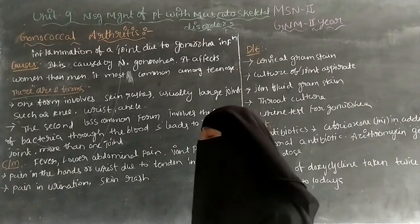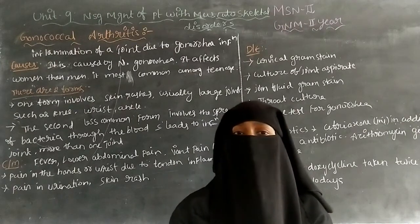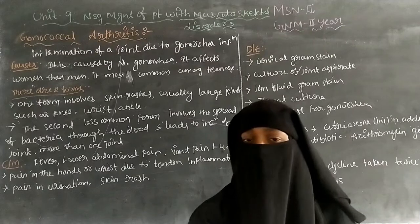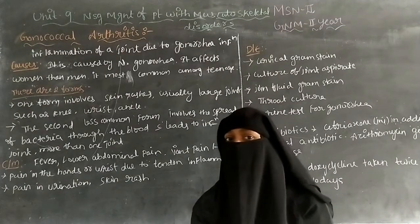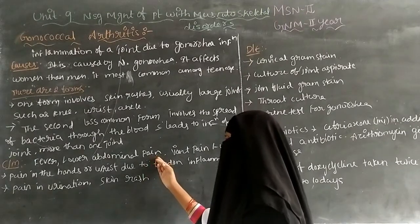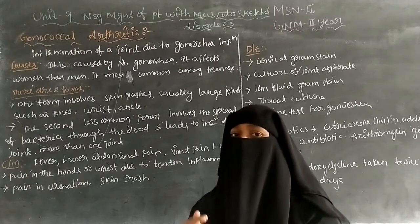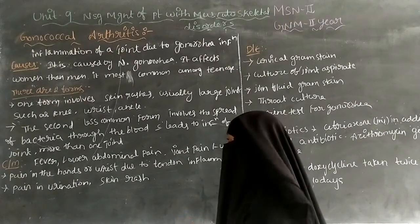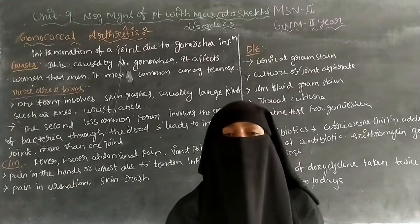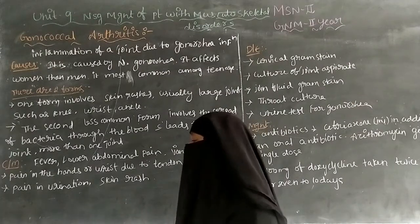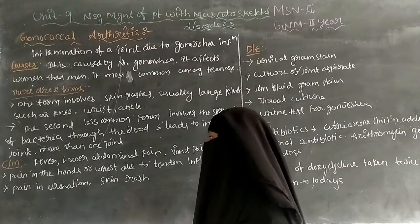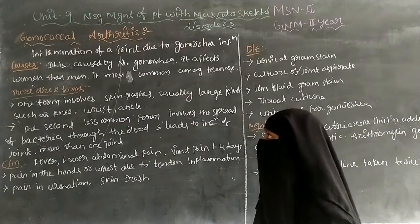Additional clinical manifestations include pain during urination — the patient will experience pain while passing urine — and skin rashes over the body due to the gonococcal arthritis.